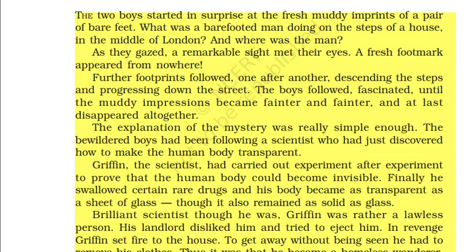The story starts with two boys on the street who were surprised to see fresh muddy footprints of bare feet on the steps of a house without finding who was making them. Further on, the footprints disappeared. These footprints had been made by Griffin, an eccentric scientist who had discovered how to make his body transparent. He could only be seen by the clothes he was wearing.